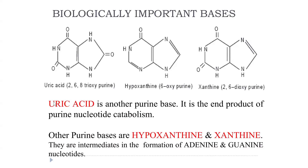Hypoxanthine and xanthine are intermediates in the formation of adenine and guanine nucleotides.